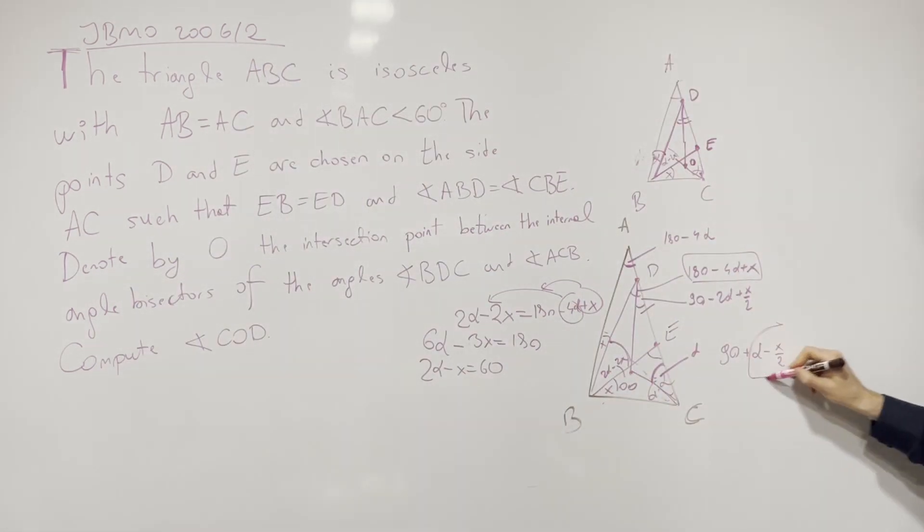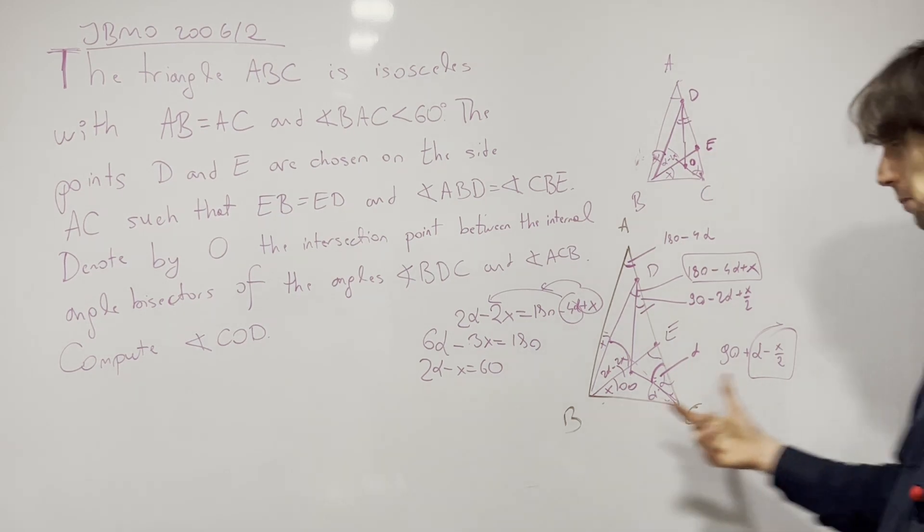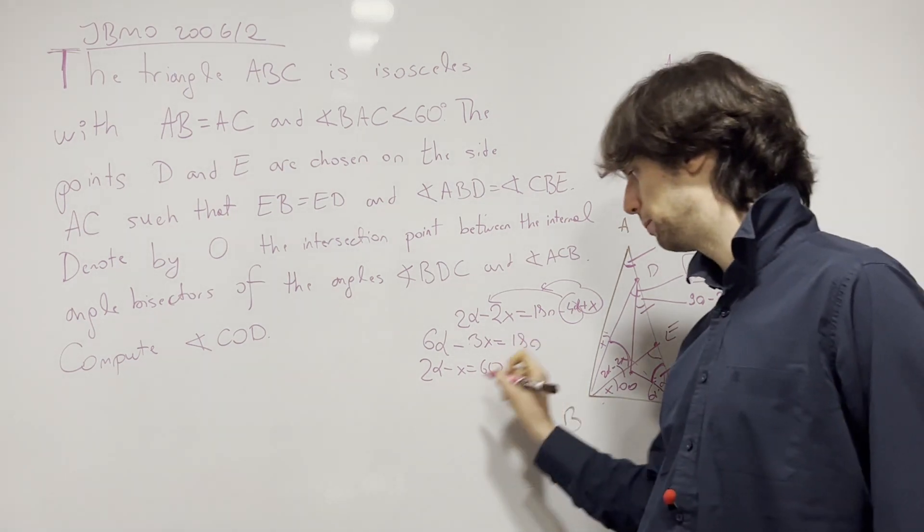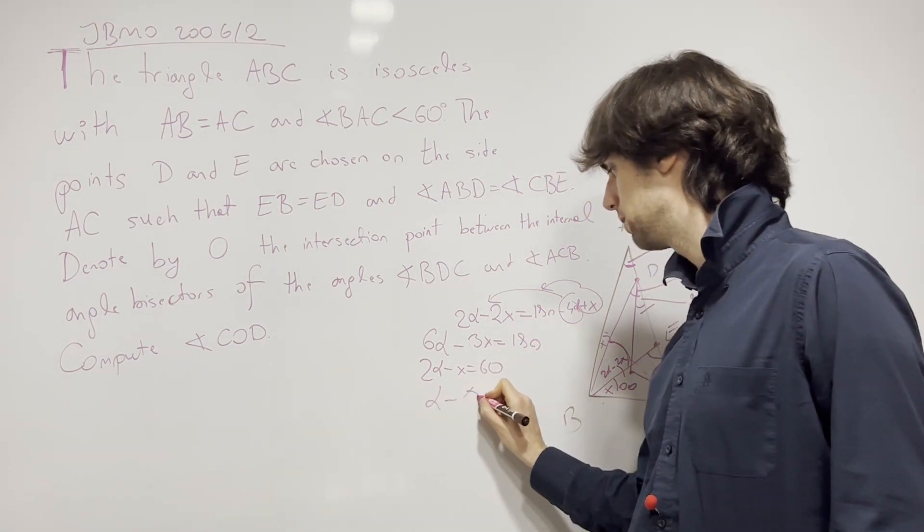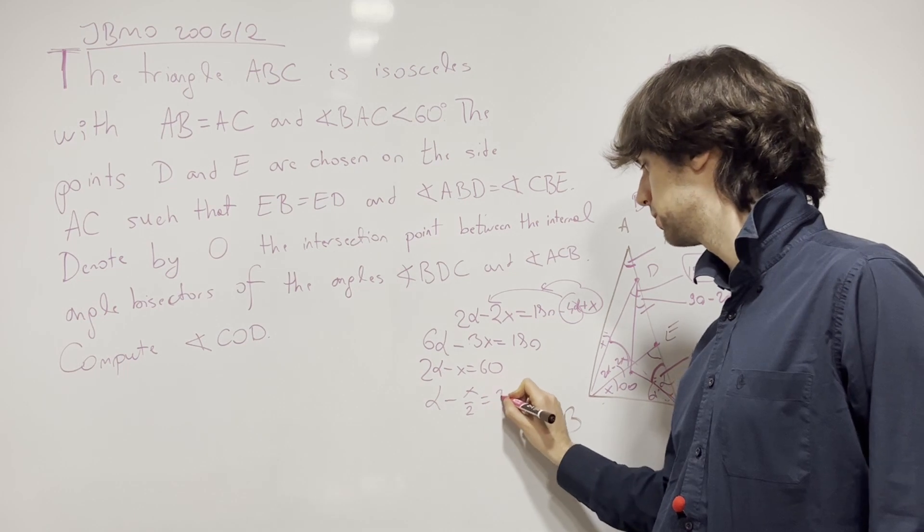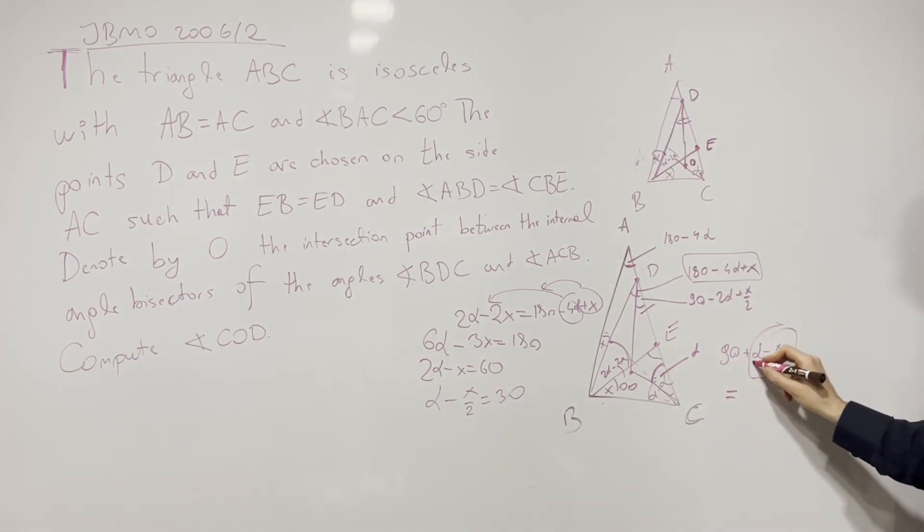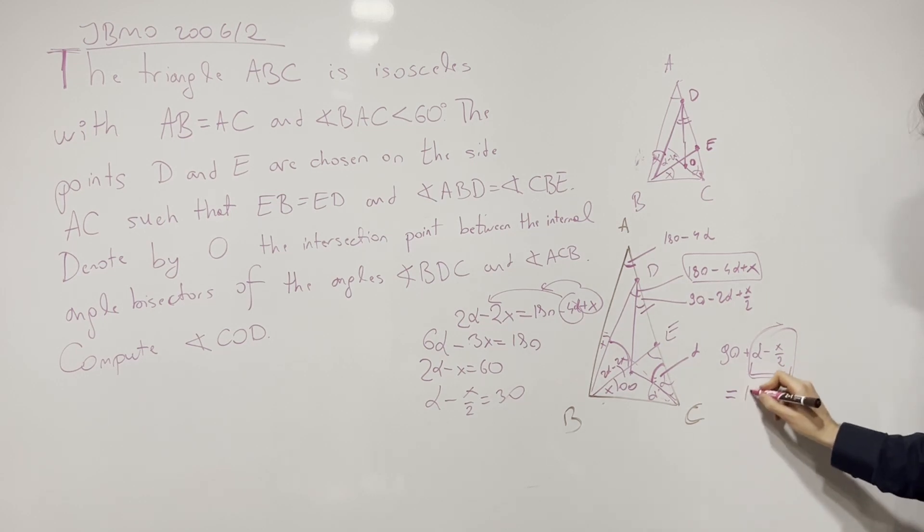And when we divide by 3, we'll get 2 alpha minus X equals 60. I invite you to pause for 2 minutes and figure out how would you combine this and this. And the answer is you divide by 2 again, and you have alpha minus X over 2 equals 30. And so this whole angle becomes 90 plus 30. So this becomes 120.